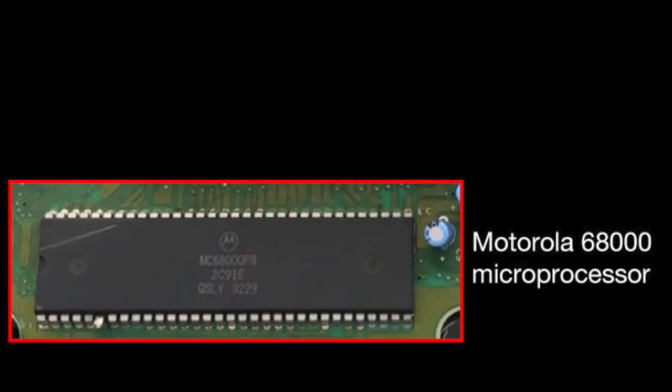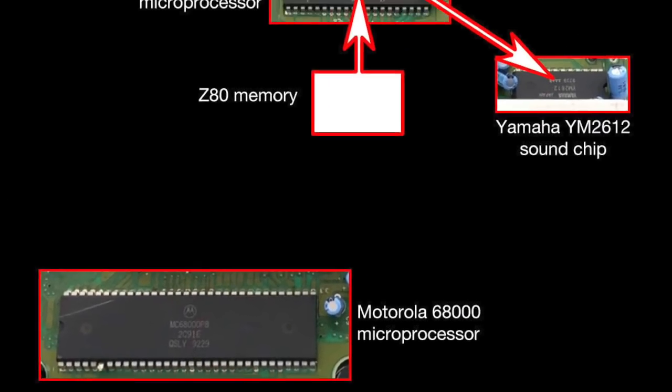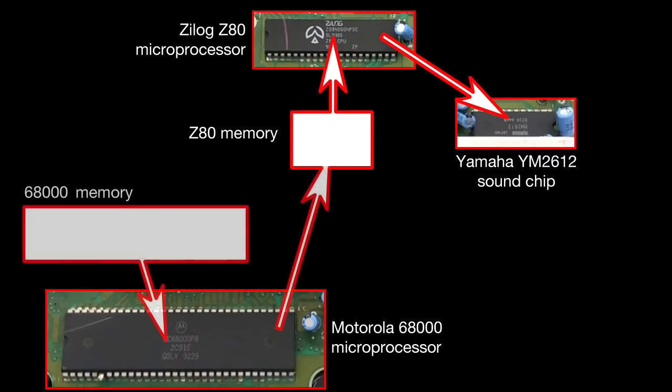Now, the 68000 main processor can copy from its own memory to the Z80's memory, but there is a catch. To do this, it has to stop the Z80 accessing memory at the same time, and if it does that, the Z80 will stop playing the sample, meaning everything will fall silent during the memory transfer, which is obviously pretty bad when you're trying to play music.